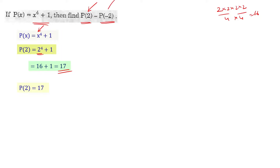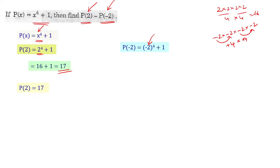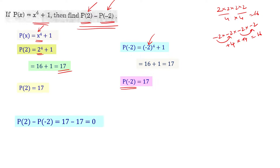Now we find p of minus 2. p of minus 2 equals minus 2 whole to the power 4 plus 1. That is minus 2 times minus 2 times minus 2 times minus 2. Minus times minus gives plus, so we get plus 4 times plus 4, which equals 16. So p of minus 2 equals 16 plus 1, that is 17. Therefore, p of 2 minus p of minus 2 equals 17 minus 17, which equals 0.